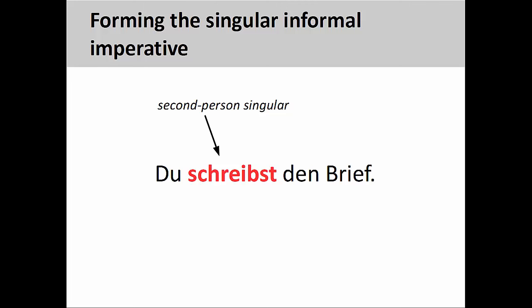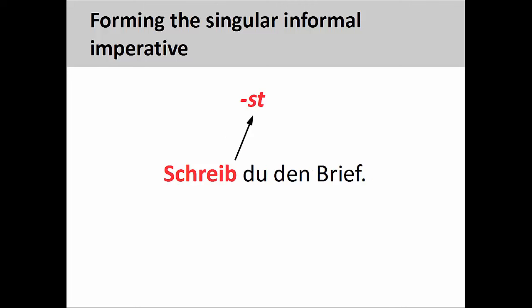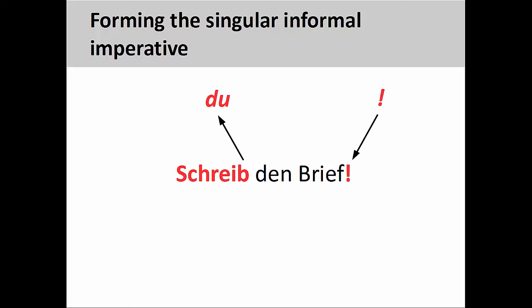The main thing to remember is that all of these forms are derived from the second person singular verb conjugation. Let's use the sentence du schreibst den Brief — you write the letter — to see how to do this. First, move the verb to the first position and drop the -st ending, which is the second person singular ending. Once this is done, you remove the second person singular personal pronoun, du, from the sentence and add an exclamation point.